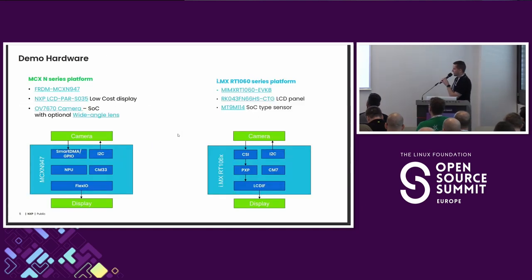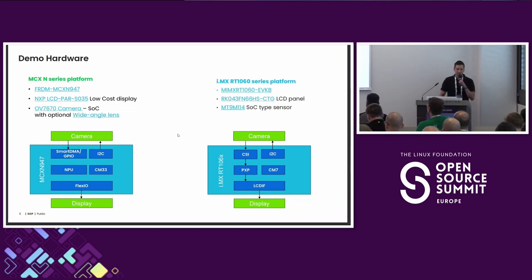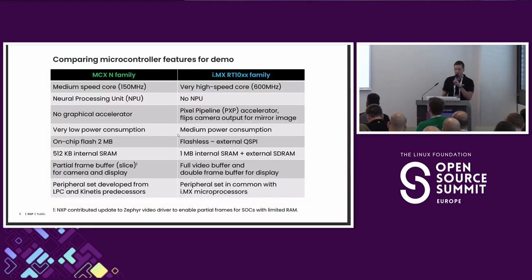On this slide you can see the two platforms: MCXN and RT1060. The only similar interface is I2C; they have completely different internals. NXP LCDs, displays, and other peripherals can be purchased as shields, and they come with device tree configuration, so you can simply add them to your project and work with them as you want.